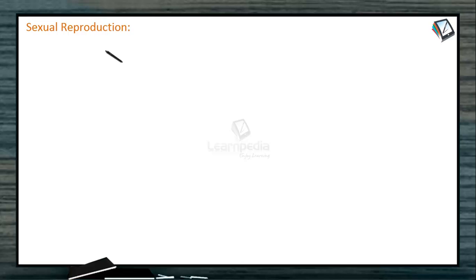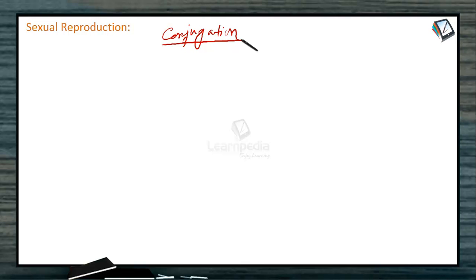The sexual method is by a process called conjugation. In conjugation, two cells participate. Whether it is scalariform conjugation or lateral conjugation, two cells must participate in sexual reproduction.